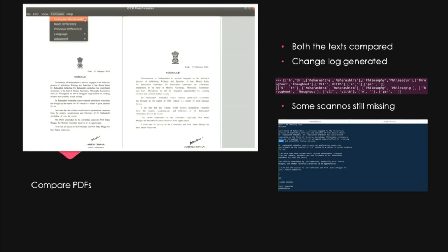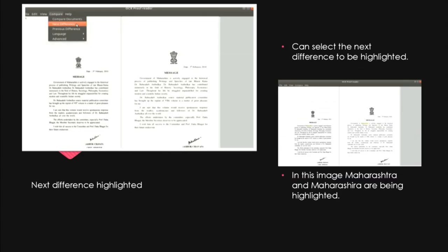Some scanners would still be missed because OCR is prone to scanner errors — for example, here I tried to highlight the word 'modern' and missed it. Using the 'next difference' button, errors are highlighted one by one — for instance, 'Maharashtra' where the word differs in the other PDF.